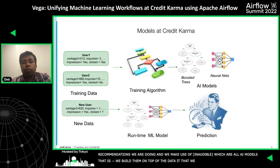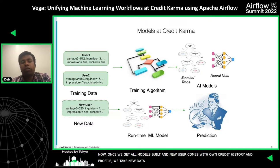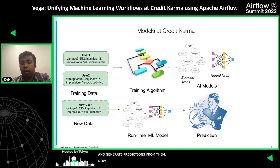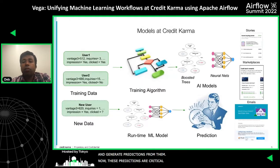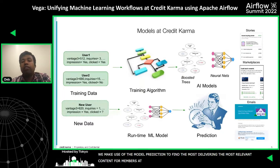Once we get all the models built, and when a new user comes with their own credit history and credit profile, we take this new data, power it through our runtime machine learning model, and generate predictions. These predictions are critical to power the story marketplaces and emails. We make use of model predictions to find the most relevant content for our members at all channels: stories is the personalized news feed, marketplace is where we show financial offers, and notifications is where we send mails to our members.